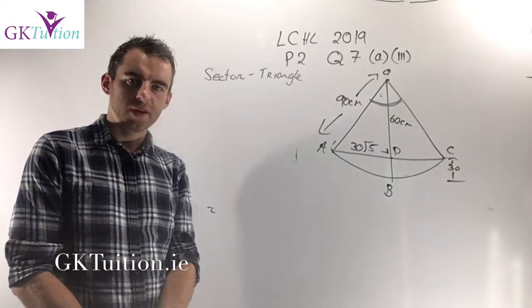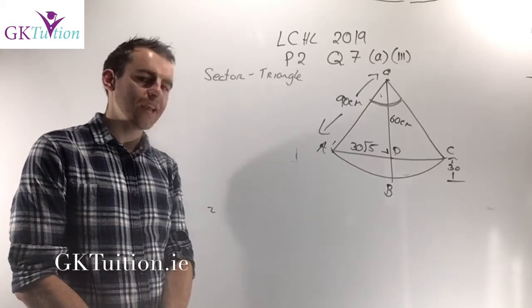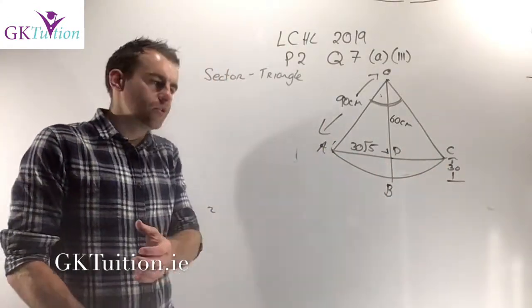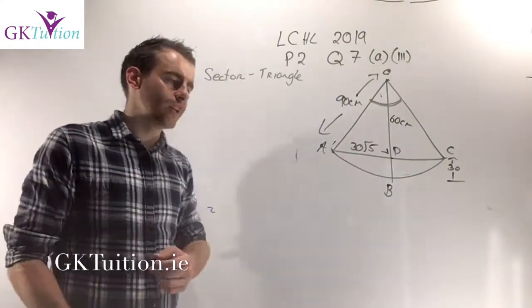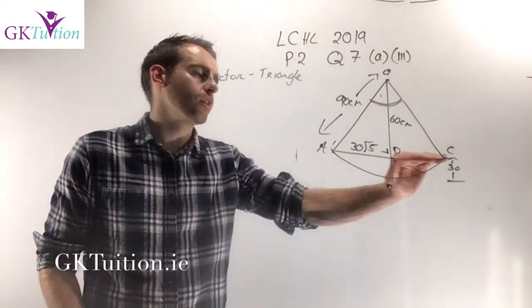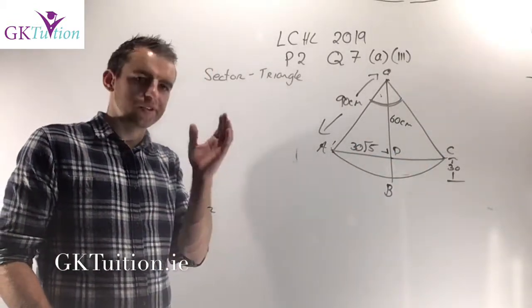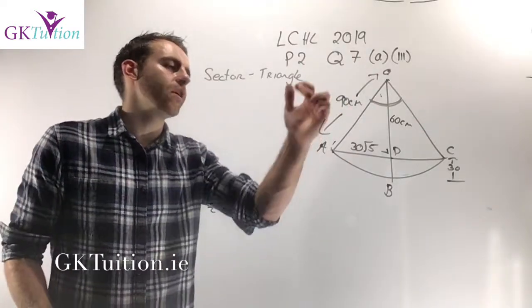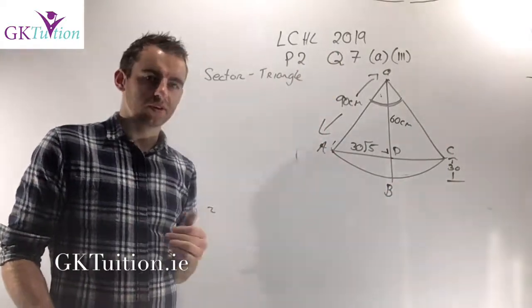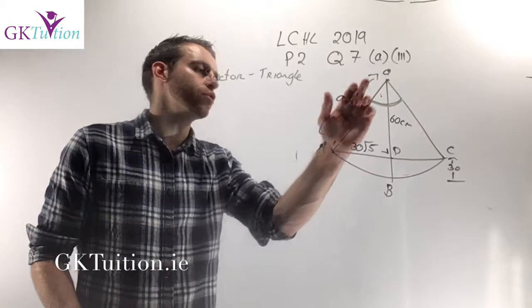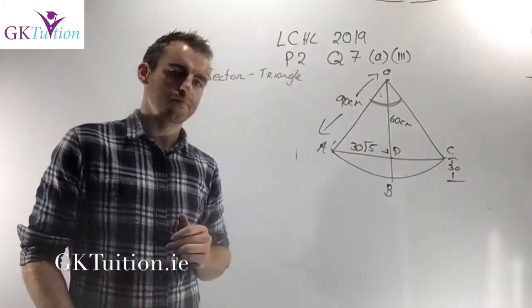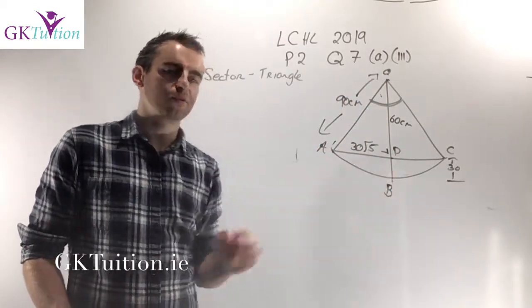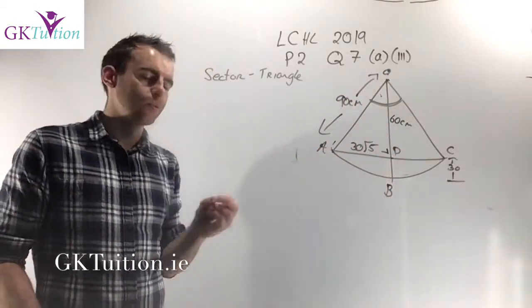In part 3, we're asked to work out the area of segment ABC. The segment is an irregular shape with no direct formula. What we can do is get the area of the full sector of the circle and then subtract the area of triangle OAC. We get the whole thing, subtract the triangle on top, and we're left with segment ABC.